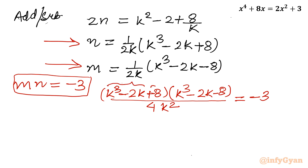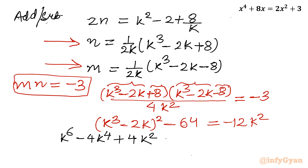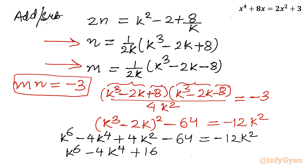You can see this is a difference of squares, a plus b times a minus b. So applying a squared minus b squared formula: k cube minus 2k whole square minus 64 equal to negative 12k square. Applying the a minus b whole square formula: k power 6 minus 4k power 4 plus 4k square minus 64 equal to negative 12k square, giving k power 6 minus 4k power 4 plus 16k square minus 64 equal to 0.